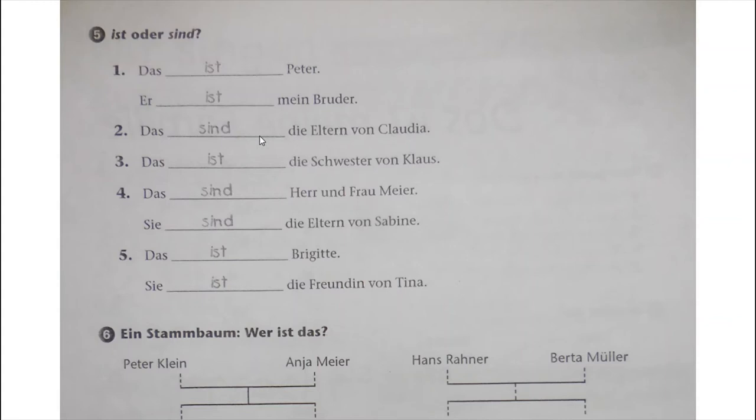Das ist die Schwester von Klaus. Then Nummer 4: Das sind Herr und Frau Meier. Sie sind die Eltern von Sabina - there are two people, Eltern is plural. Then: Das ist Brigitte. Sie ist die Freundin von Tina.